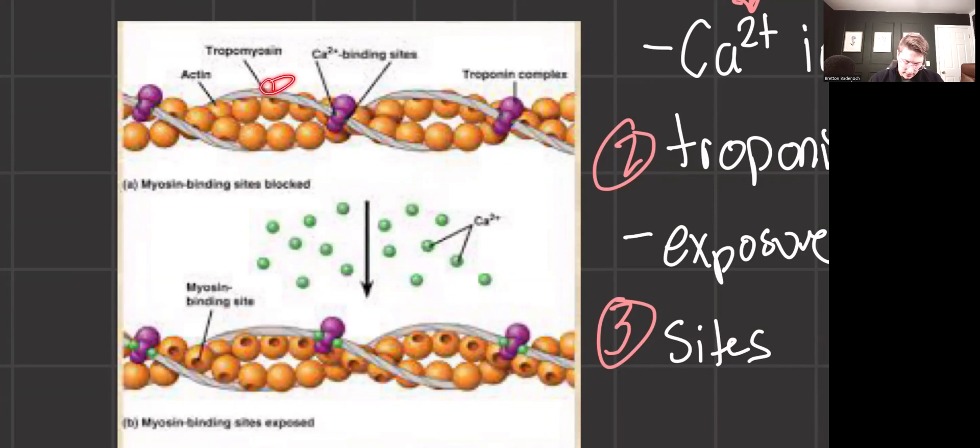We can see that when tropomyosin is moved, now all of a sudden there are these little circles on the orange for myosin binding sites that we can begin doing a power stroke, which we'll talk about in a moment.